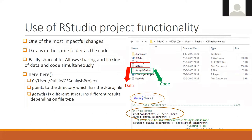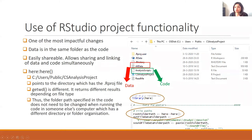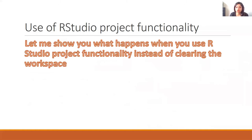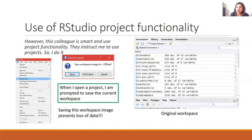Let me show you now what happens when you use the R Studio project functionality instead of clearing the workspace. We've seen this example of losing all my variables. Now we'll go through the same scenario again in a different manner. Same scenario — I have similar variables available. And this time my colleague sends me a project, so they don't only share the script but share the whole project. I open that project using R Studio.